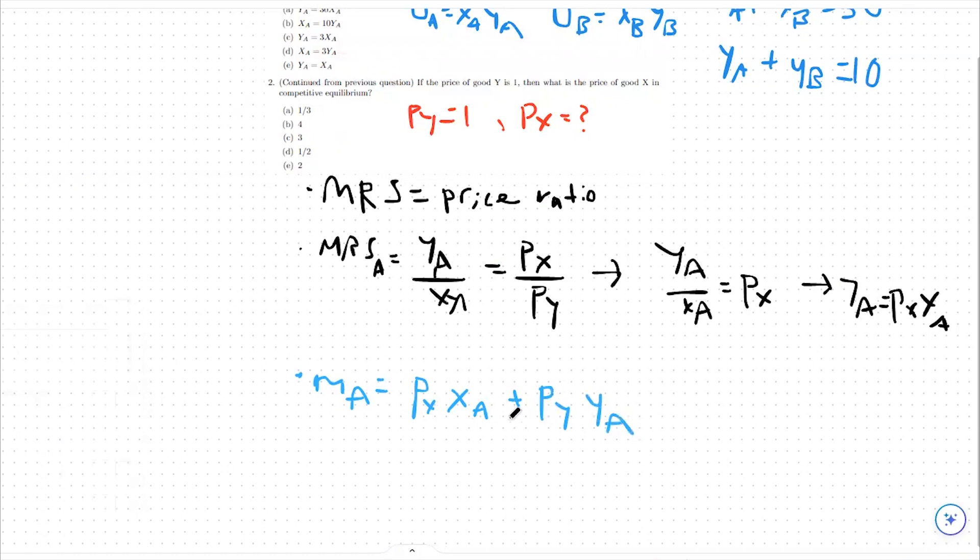So again, we know that py is just equal to 1. So MA is really equal to px xA plus yA.